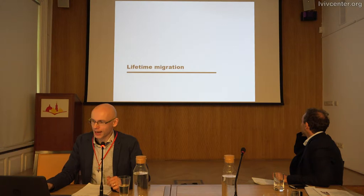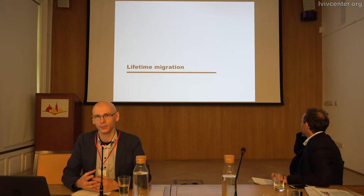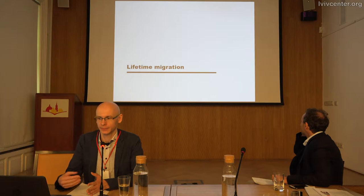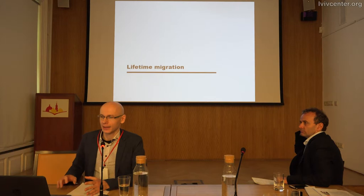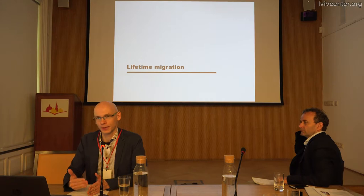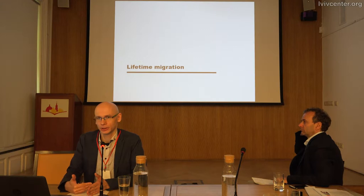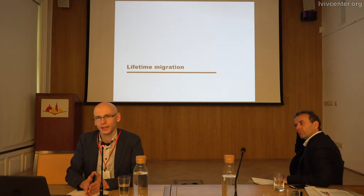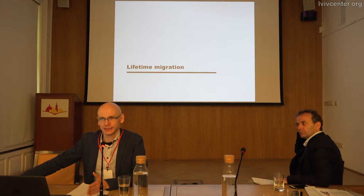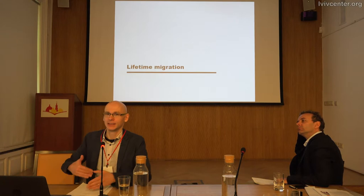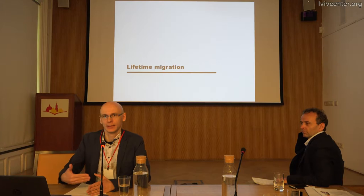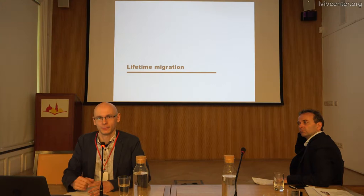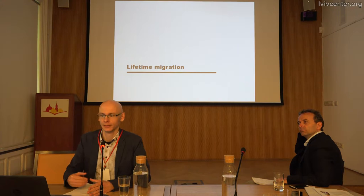I studied two things from the census data. I compared the place of birth — which I geotagged and approximated to the district center — with the place of enumeration. I call this lifetime migration: I look at where a person was born and where they were living in 1897. Another approach is to compare the place of living with the place where someone had left. The 1897 census was a combination of the de jure and de facto census, registering people at home but also those who had left temporarily and were expected to come back.